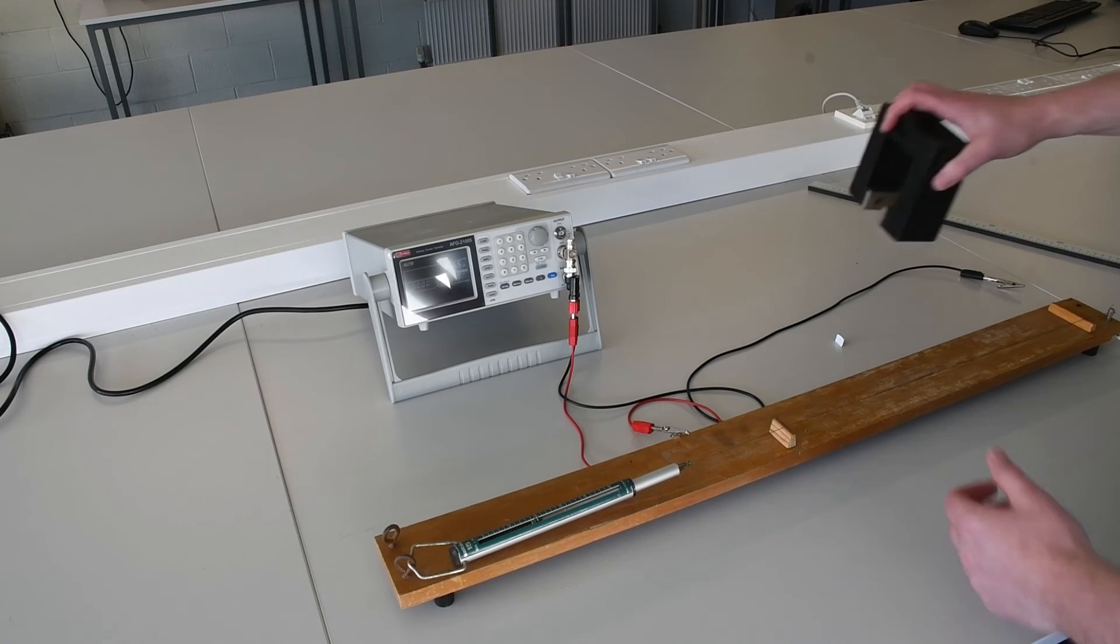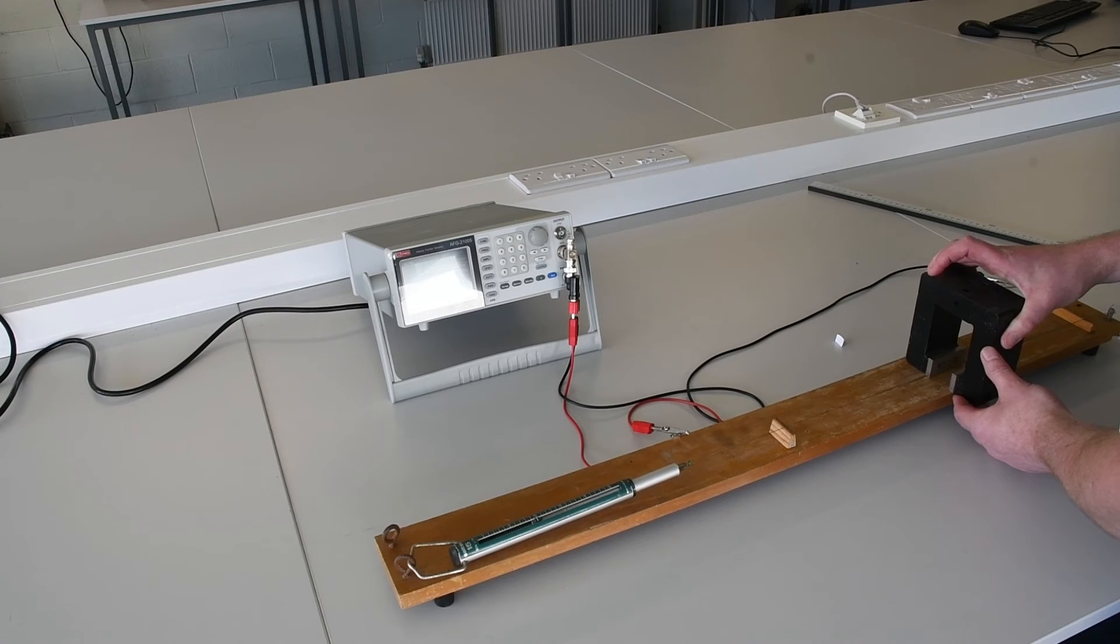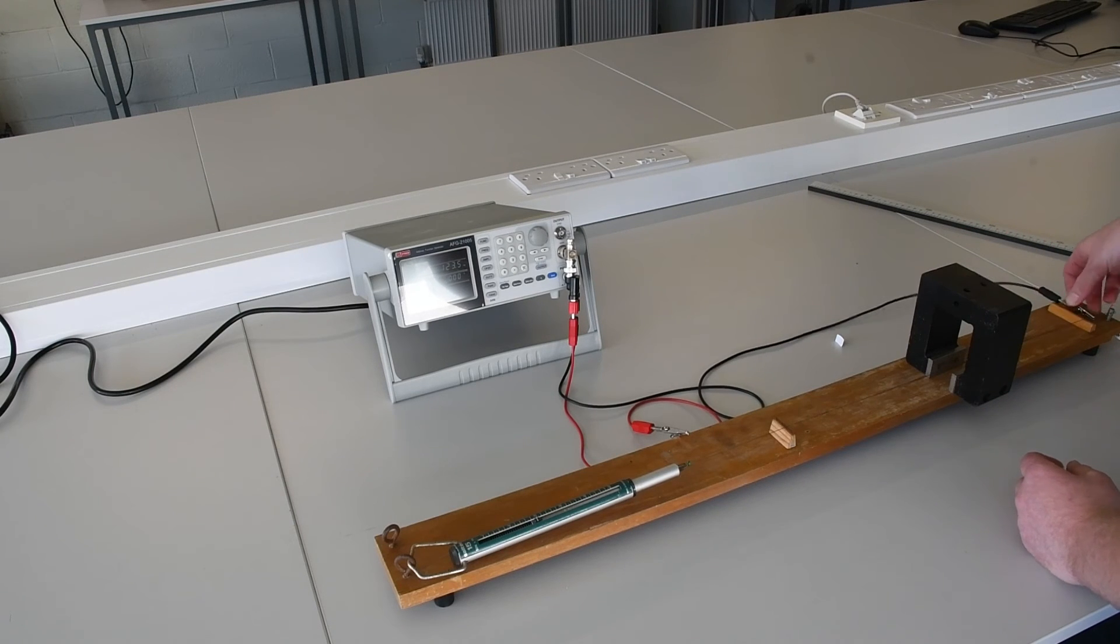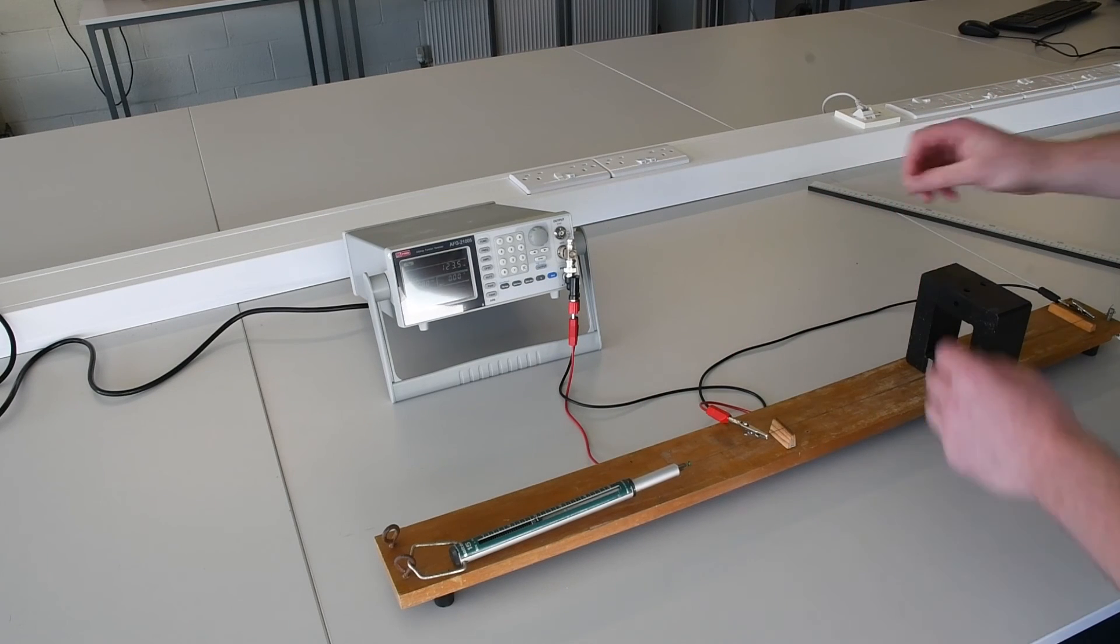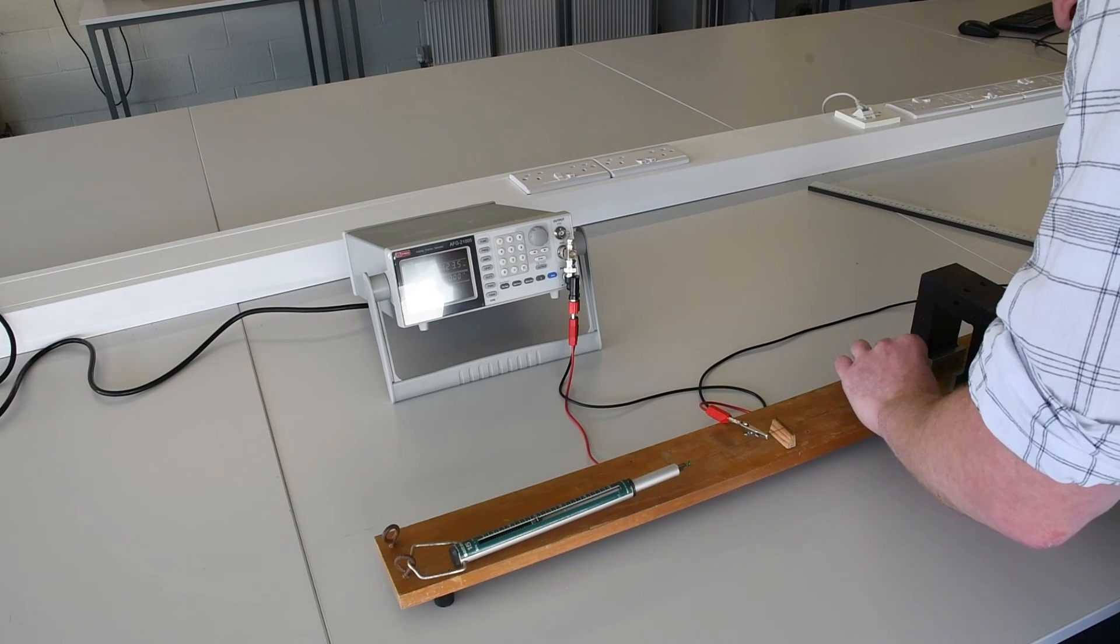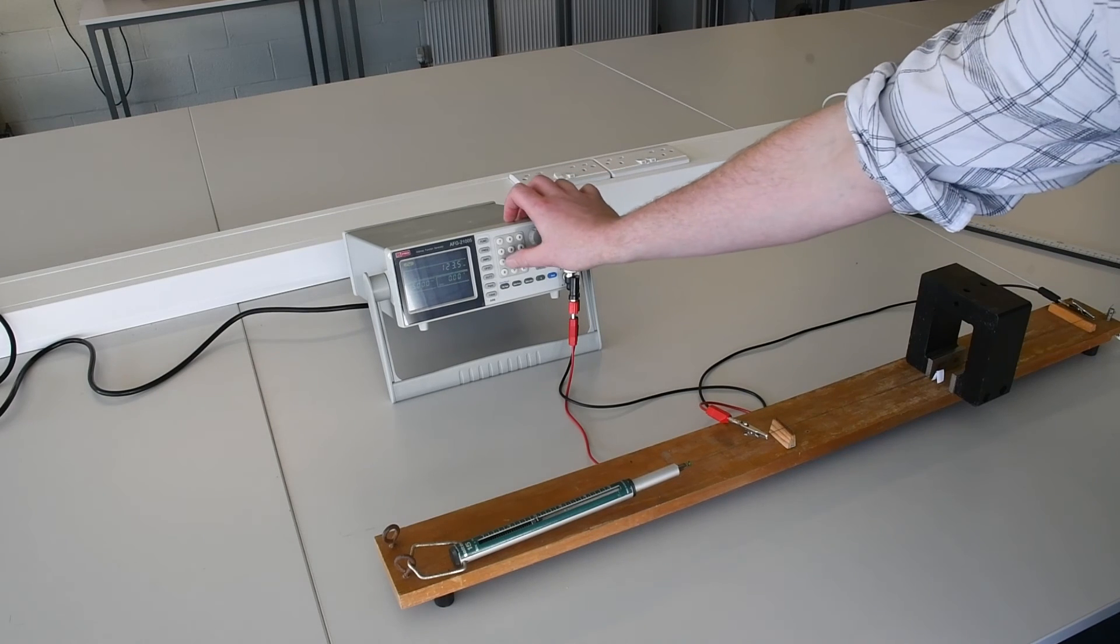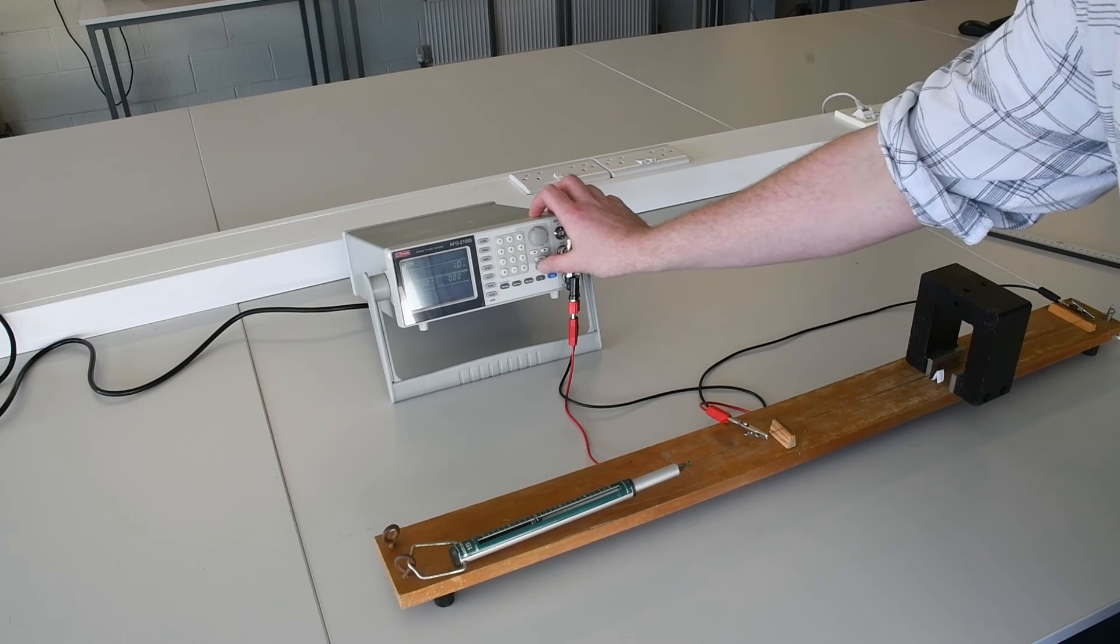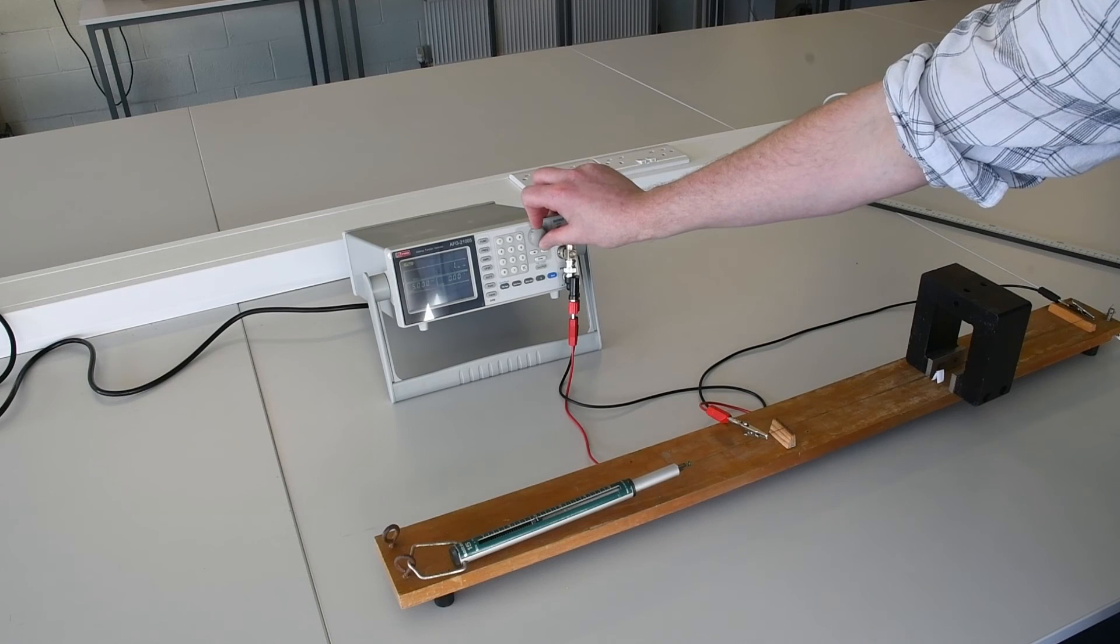And then we replace the magnet in the middle between the two bridges, so this will be a slightly different position. We can reconnect our signal generator, replace the paper writer, and start at a low frequency on our signal generator. And gradually increase it until we reach maximum vibration for this new string length.